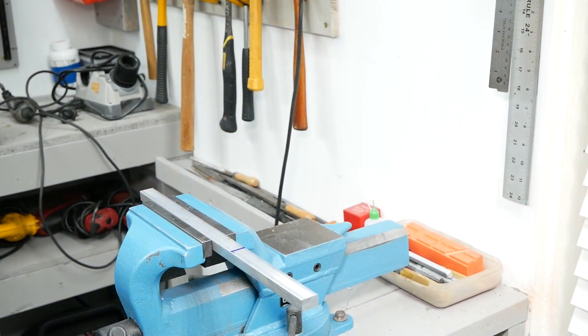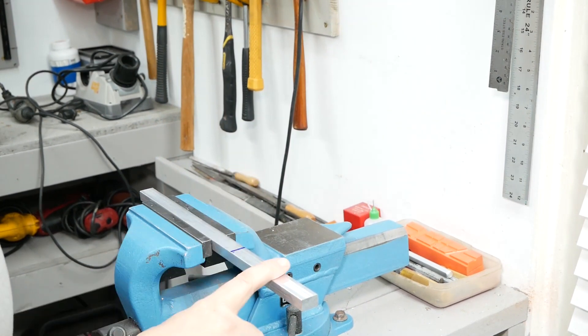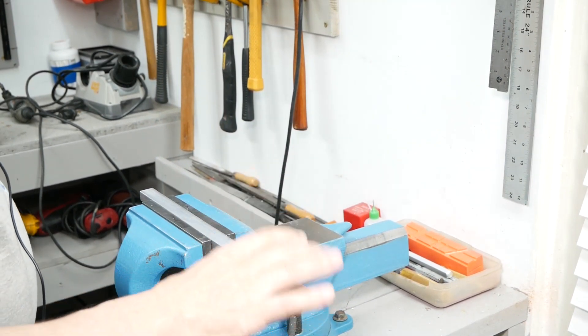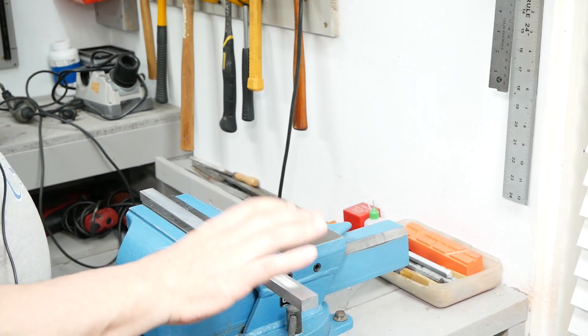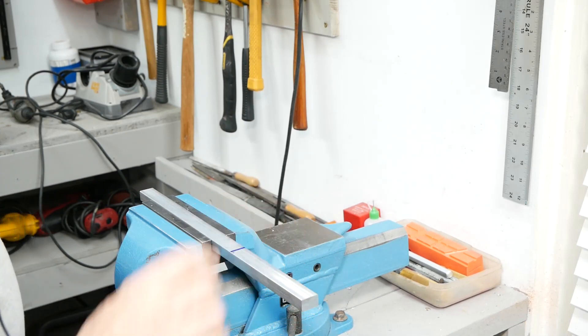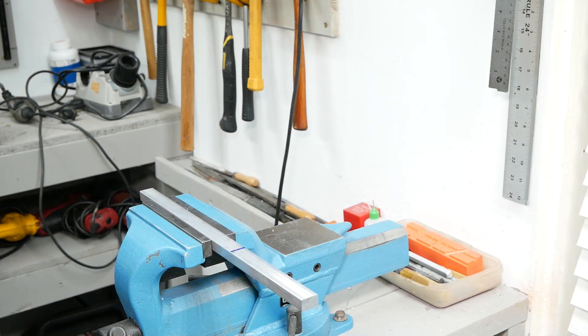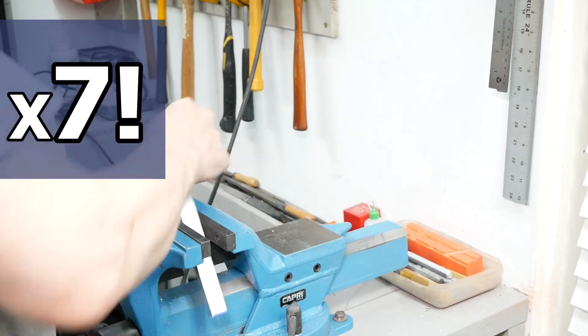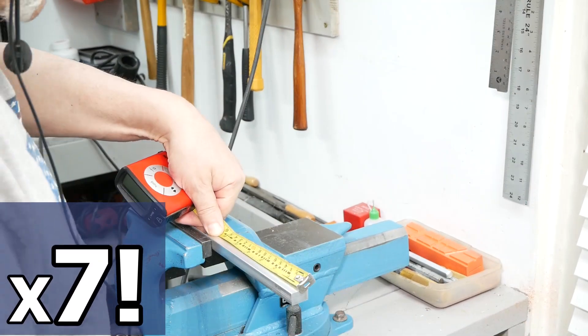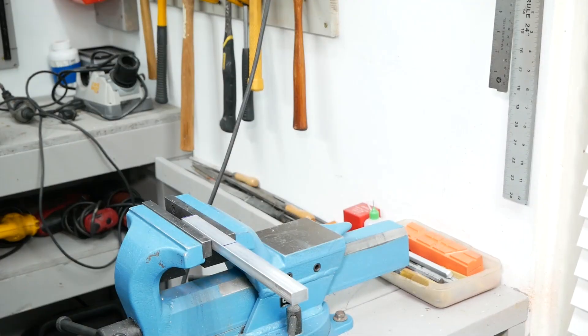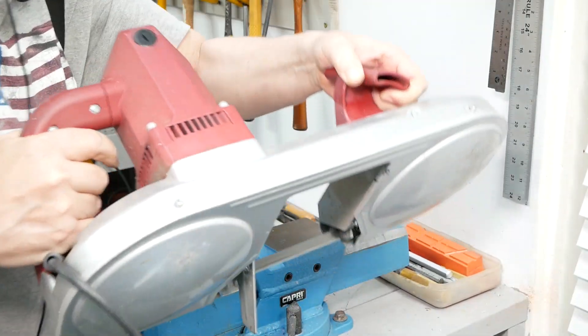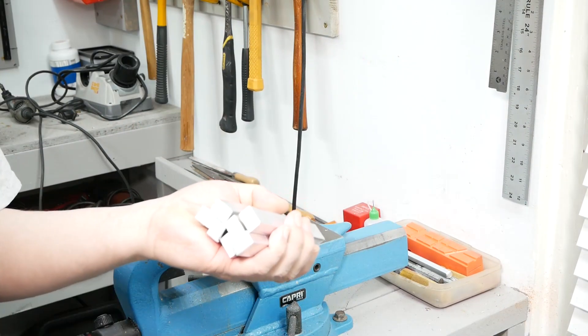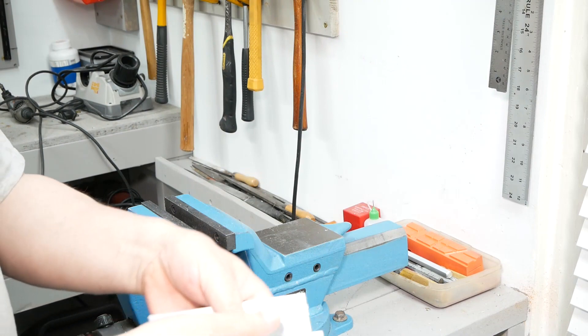All righty, now we are here at the vise. And I am going to have to cut 6 of them, 2 for each end and 2 for the cam support. I may even make 8 just to be on the safe side. Okay, here we are. 7 pieces. And now we are going to square them all up in the mill.